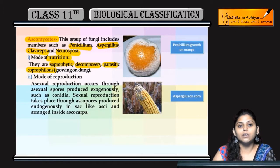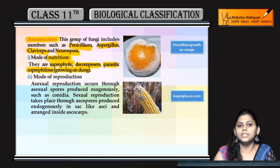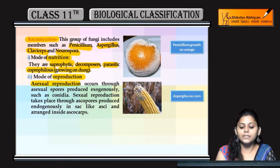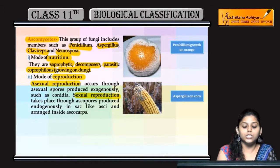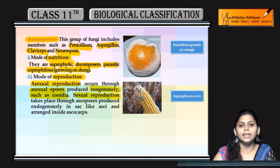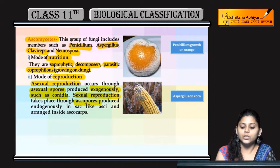Ascomycetes decomposers bhi hote hain, parasitic coprophyllous bhi hote hain. Coprophyllous matlab jo dung pe grow kerti hai — they grow on cow dung, buffalo dung, kisi ke bhi dung pe. Inke mode of reproduction bhi asexual aur sexual dono tariqe se hoti hai. Asexual reproduction mein asexual spores jo exogenously produce hoti hain — in ka example hai conidia.